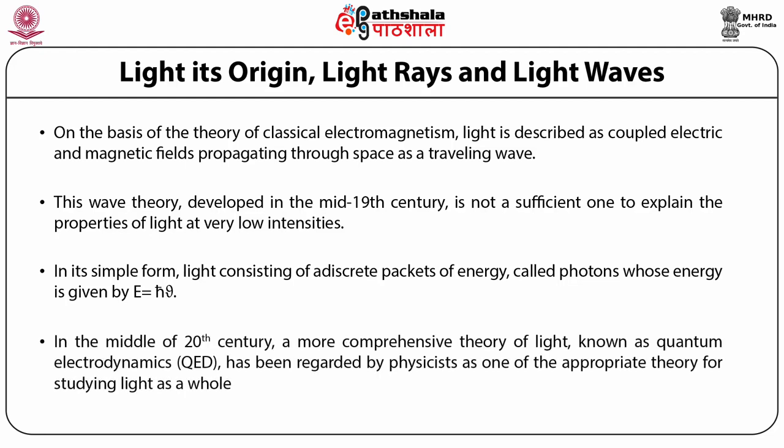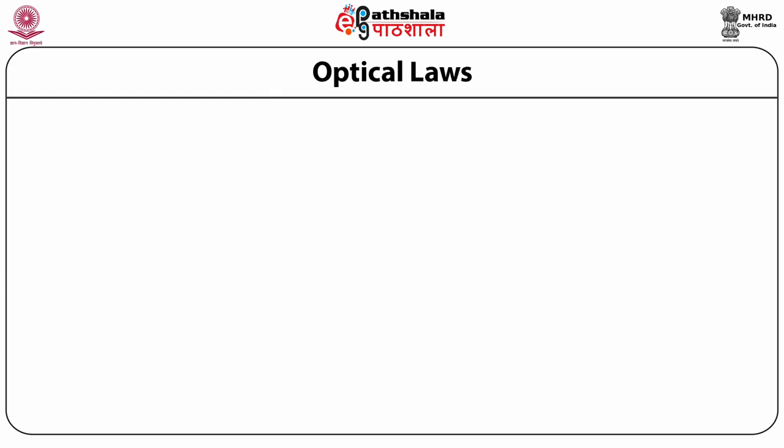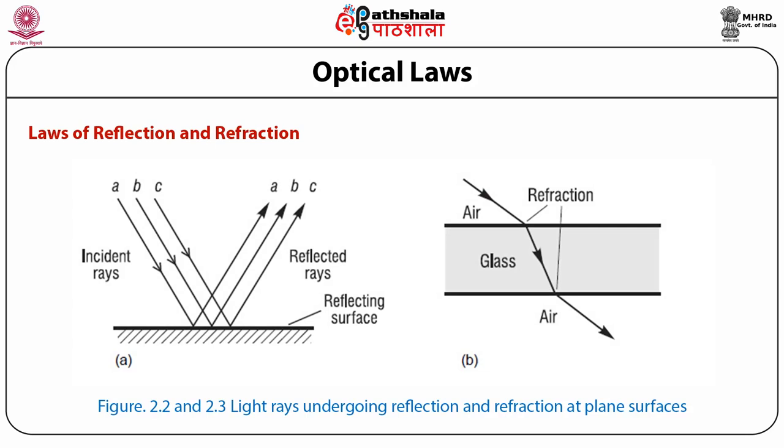In the middle of the 20th century, a more comprehensive theory of light known as quantum electrodynamics has been regarded by physicists as one of the most appropriate theories for studying light as a whole. There are several laws which describe the properties and characteristic features of light. Every student should be able to know the basic laws for studying light, such as the laws of reflection and refraction.